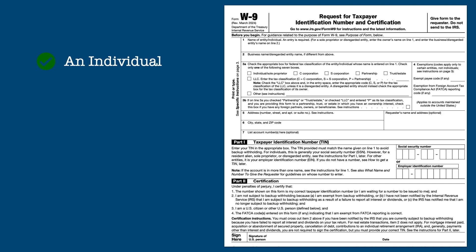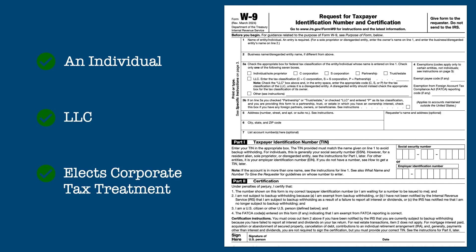For an individual in business who operates under an LLC and has elected a corporate structure for tax purposes, the name of the LLC is entered on line 1, the LLC box is checked, and the type of corporate structure — S for S Corporation or C for C Corporation — is indicated to the right of the LLC checkbox. In Part 1, the Employer Identification Number of the LLC is entered, and the individual signs and certifies the form in Part 2.